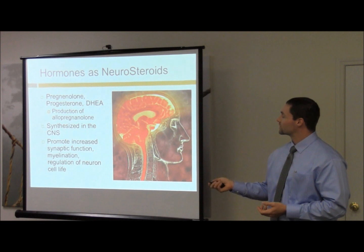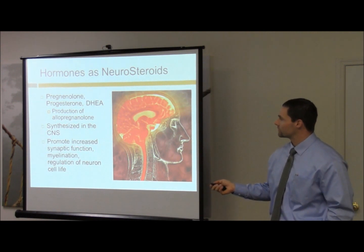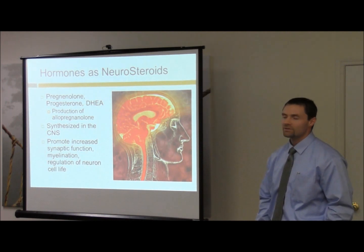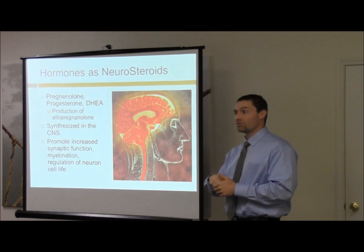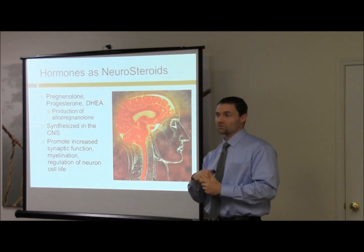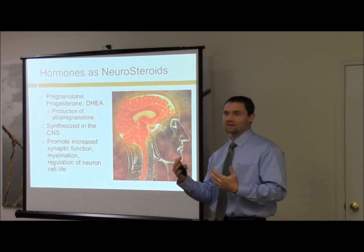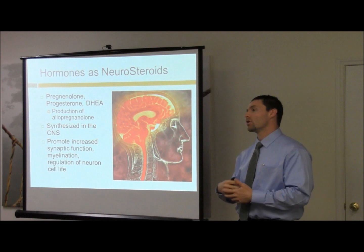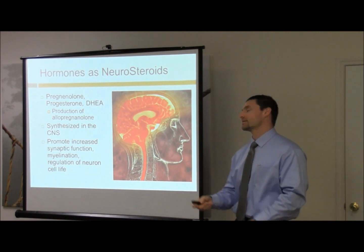Among the other things neurosteroids do: they increase synaptic function, support myelination, and regulate neuron cell life. This is what offsets neurodegeneration, and it's why those hormones have to be present at adequate levels — but not too much, because there's a balance.